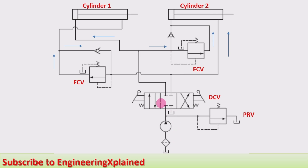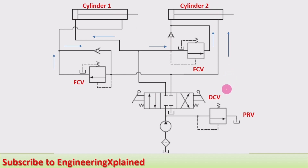And two flow control valves — those are called sequencing valves — and two check valves are used in the circuit, and two double acting cylinders: cylinder one and cylinder two.